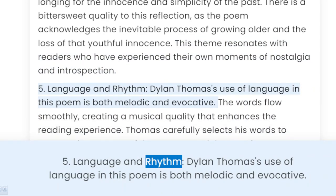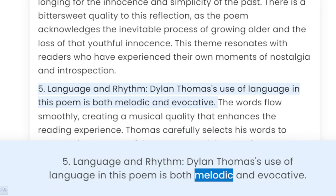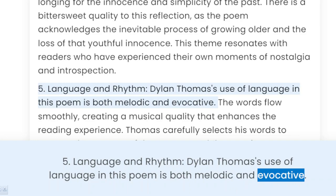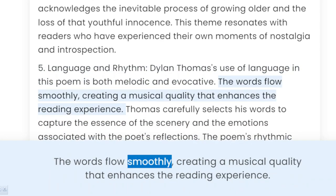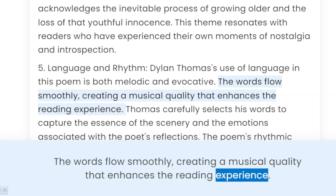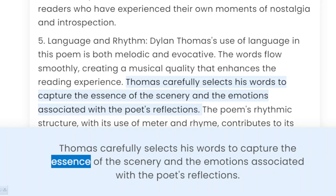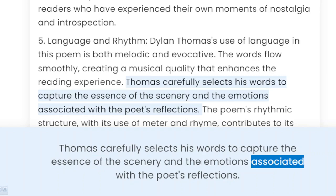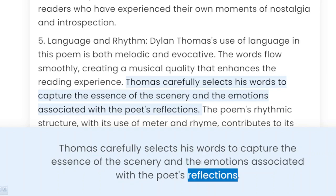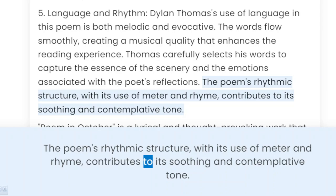5. Language and Rhythm. Dylan Thomas' use of language in this poem is both melodic and evocative. The words flow smoothly, creating a musical quality that enhances the reading experience. Thomas carefully selects his words to capture the essence of the scenery and the emotions associated with the poet's reflections. The poem's rhythmic structure, with its use of meter and rhyme, contributes to its soothing and contemplative tone.